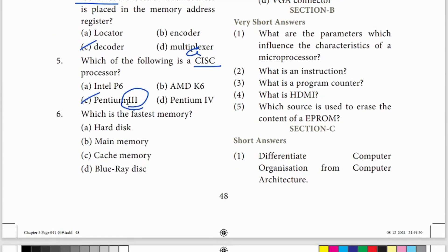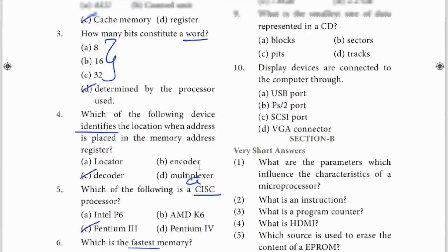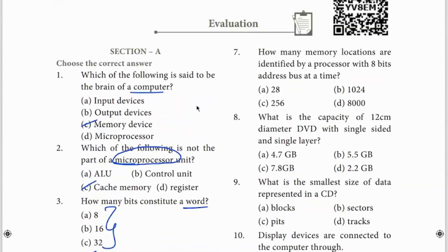Sixth question: fastest memory. This question is about fastest memory - cache or ODP. The answer is cache. Seventh question: 8-bit address bus. Address bus - one thousand members travel. The name is 256. Two to the power 8 equals 256.